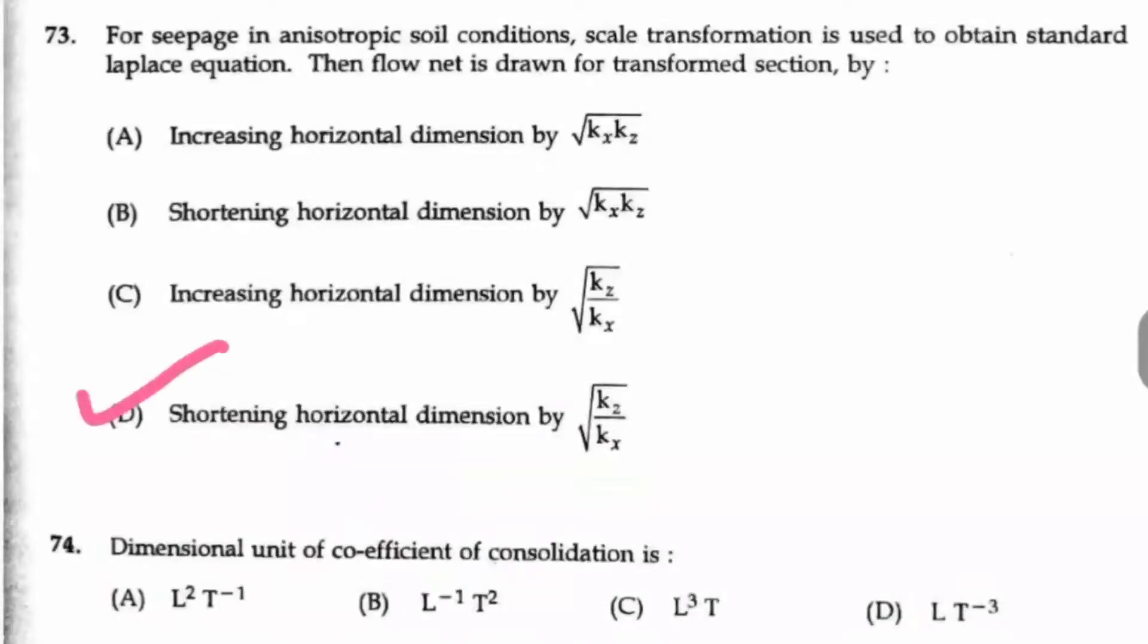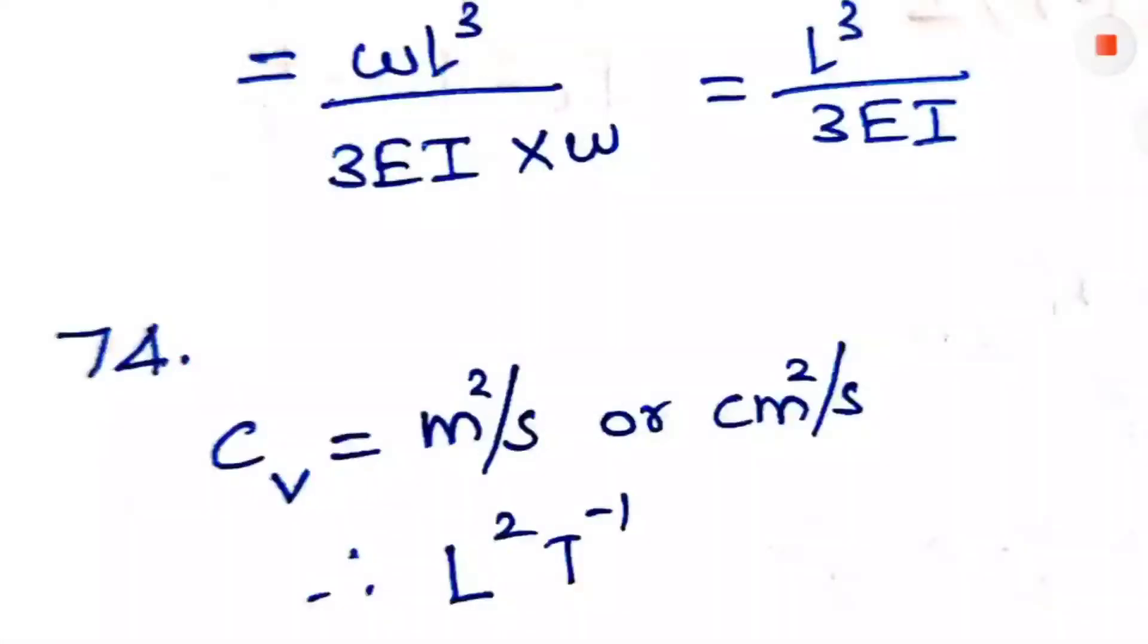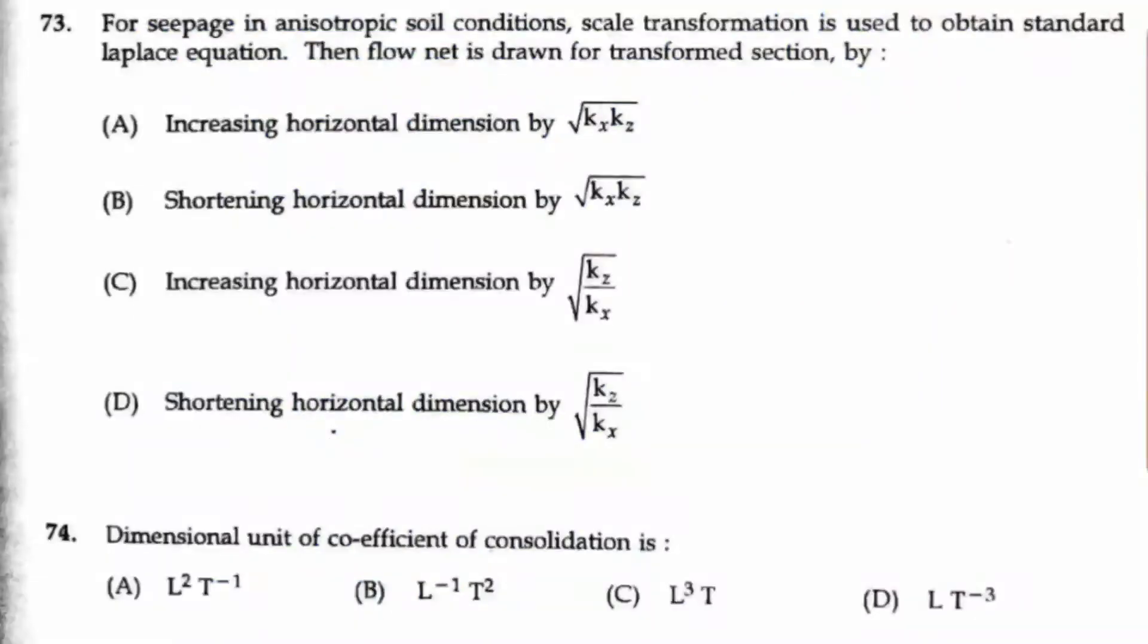Question number 74: The dimensional unit of coefficient of consolidation is? If you take the unit of the coefficient of consolidation, it can be represented as meter square per second or centimeter square per second. When we are converting it into dimensional quantities, we will be getting L² by T, so L²T⁻¹ will be the dimensional unit. Option A is the right answer.